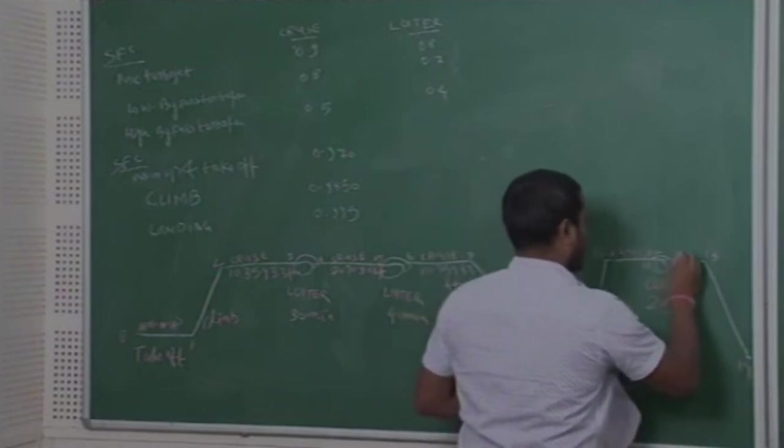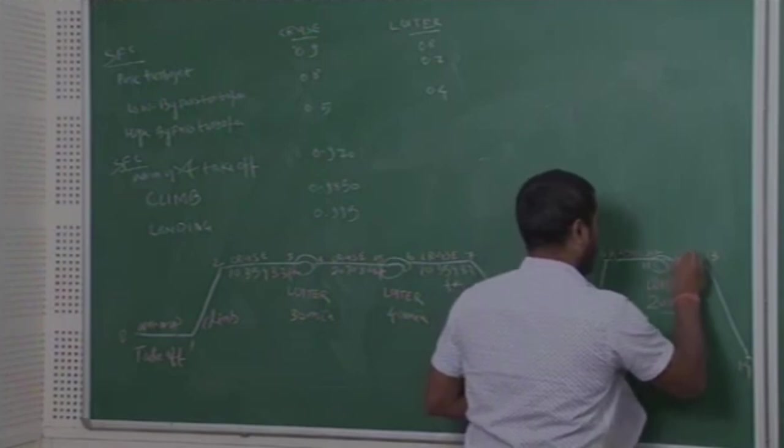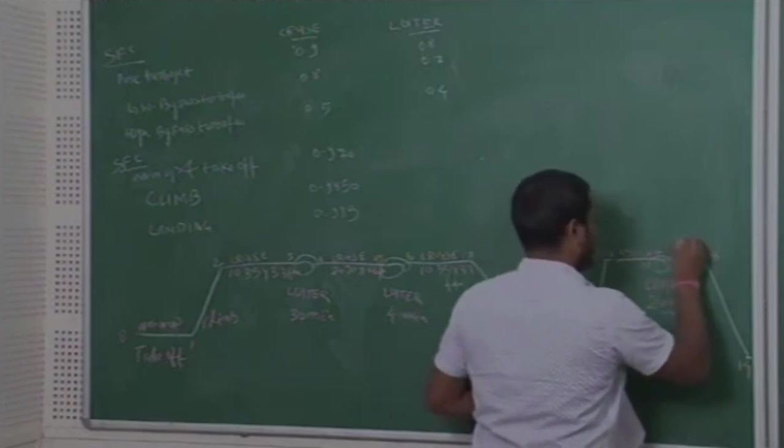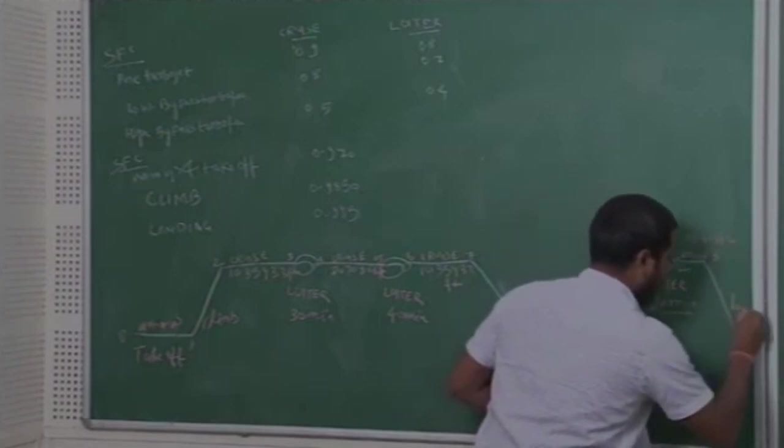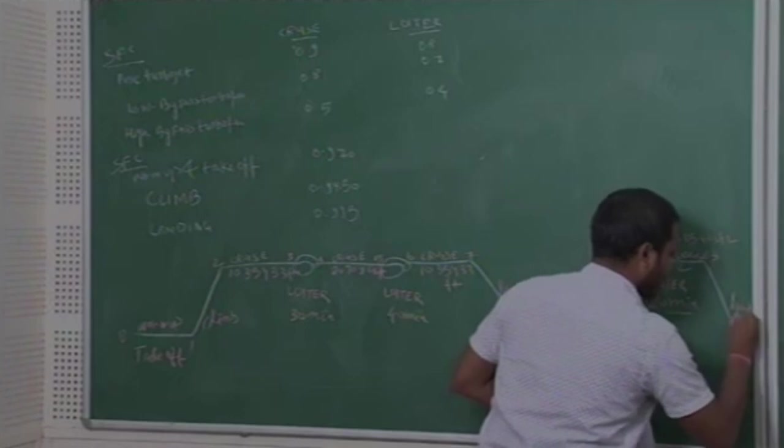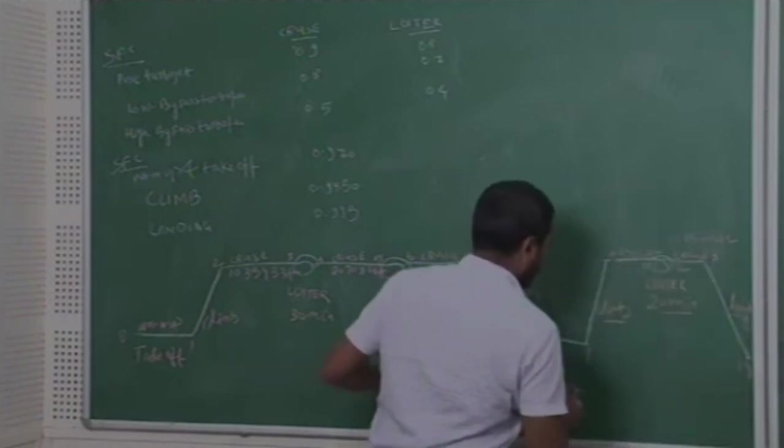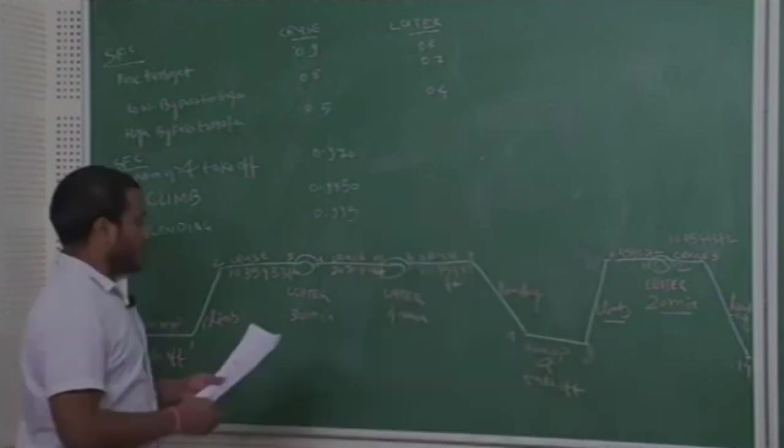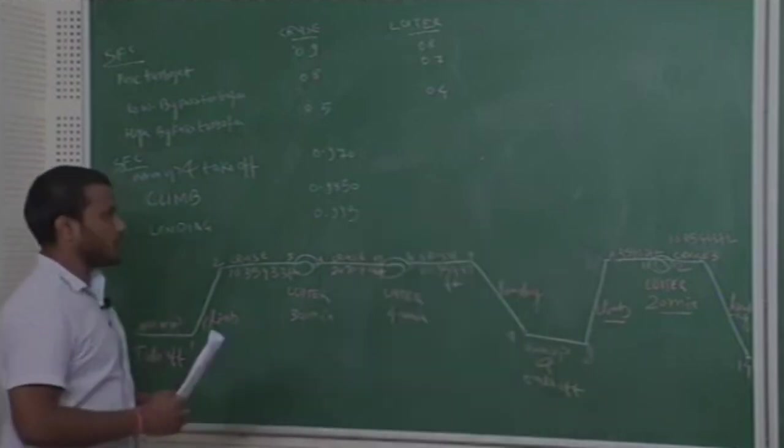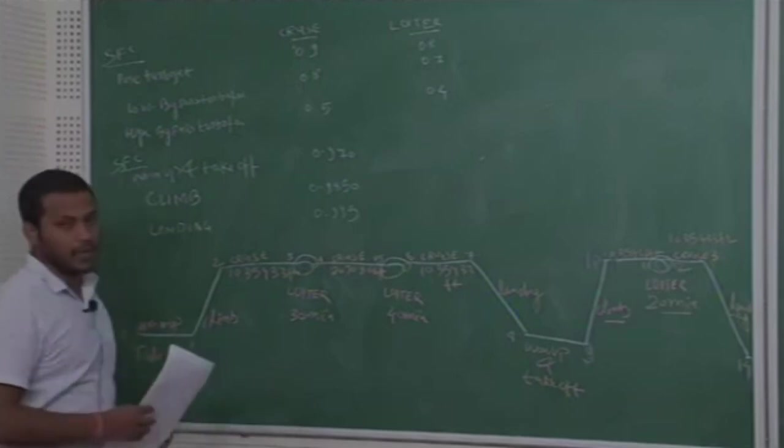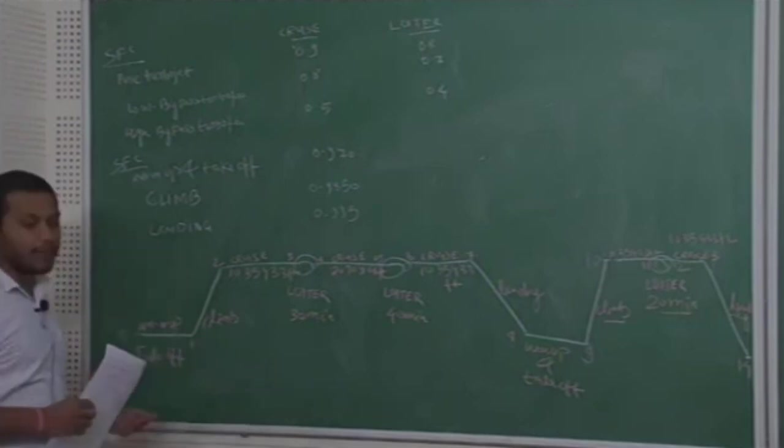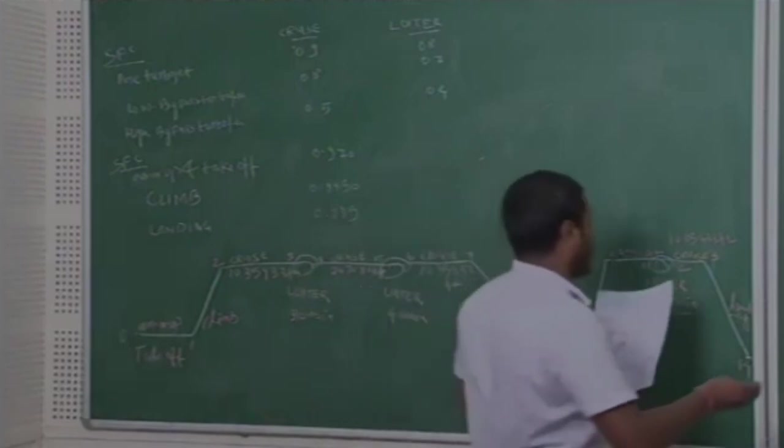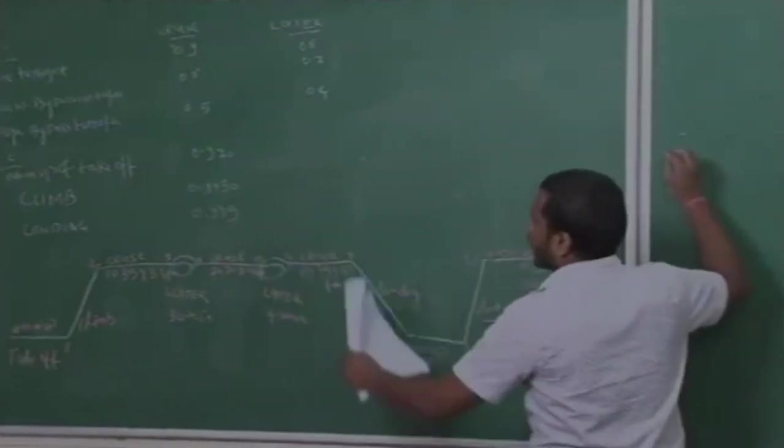So here again, cruise at same range, that is 103,543 feet and this is landing. So now, our, this is a different type of mission and we will start the calculation of weight fraction between different points. First, we will use the historical data.